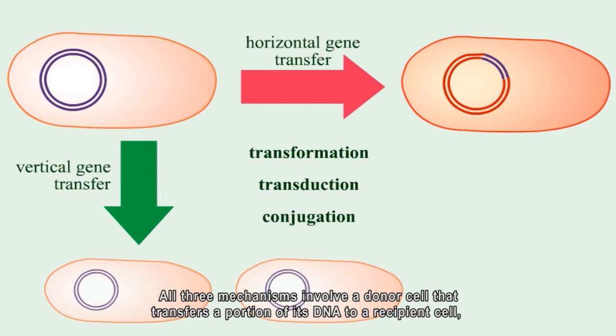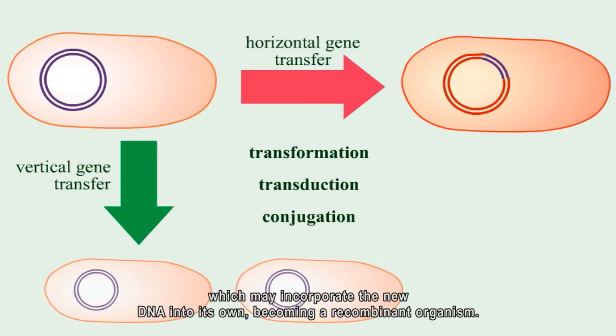All three mechanisms involve a donor cell that transfers a portion of its DNA to a recipient cell, which may incorporate the new DNA into its own, becoming a recombinant organism.